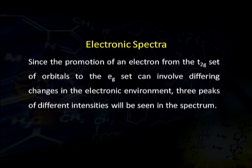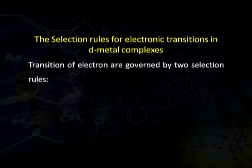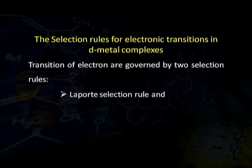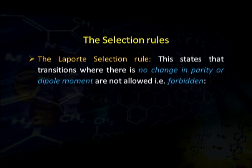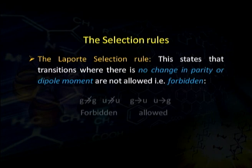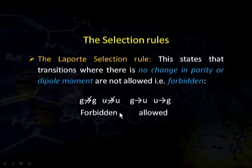The transitions of electrons are governed by two major rules: the Laporte selection rule and the spin selection rule. The Laporte selection rule states that transitions where there is no change in parity or dipole moment are not allowed — these transitions are forbidden. For example, g to g and u to u transitions are forbidden because there is no change in dipole moment. These two transitions are forbidden in nature.